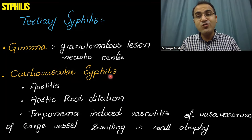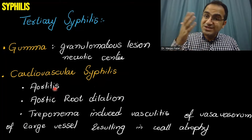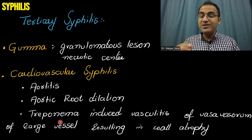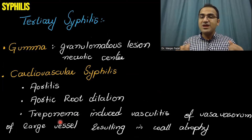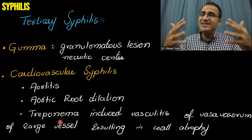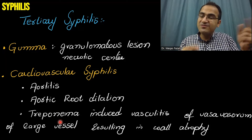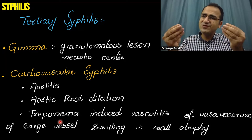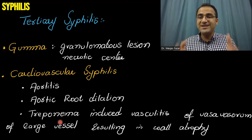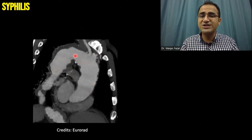Other than gummas, the patient can develop cardiovascular syphilis. Syphilis causes endarteritis — inflammation of the vessels — and aortitis, inflammation of the aorta. All large vessels of the body receive their blood supply from the vasa vasorum. Treponema affects these small vessels just as it affects vessels supplying the nerves, interrupting blood supply to the large vessels and resulting in damage to the aorta. This picture shows aortic dilation — look at the abnormal, irregular curvature of the aorta, which is characteristic of aortitis in tertiary syphilis.